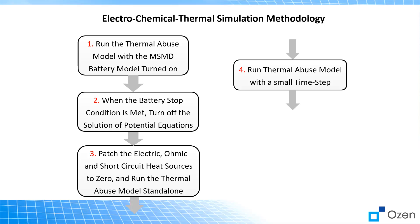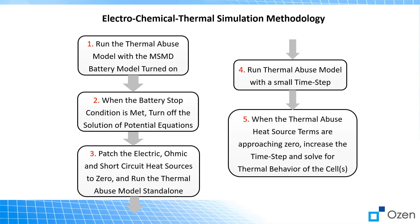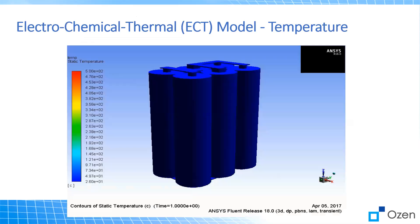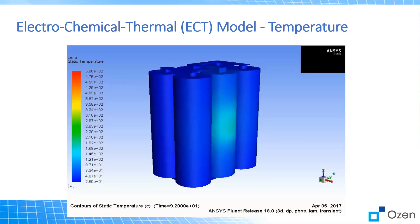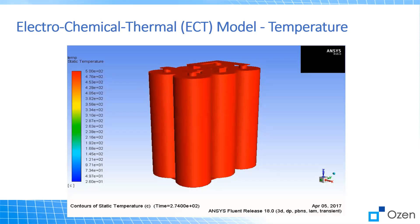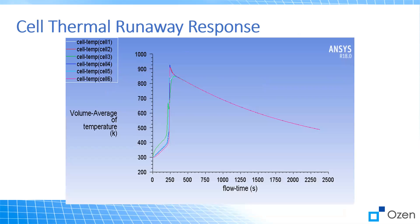The next step is that you run the thermal abuse model with a small time step, and finally when the thermal abuse heat source terms approach zero you can increase the time step and solve for the thermal behavior of the cells. This is a contour of the temperature — we can see at the point of impact the temperature goes up, heats up the entire battery, and then over time eventually starts dropping back down due to convection. Here we have a plot of the volume-averaged temperatures of each cell, showing the temperatures getting up to about 900 degrees Kelvin.